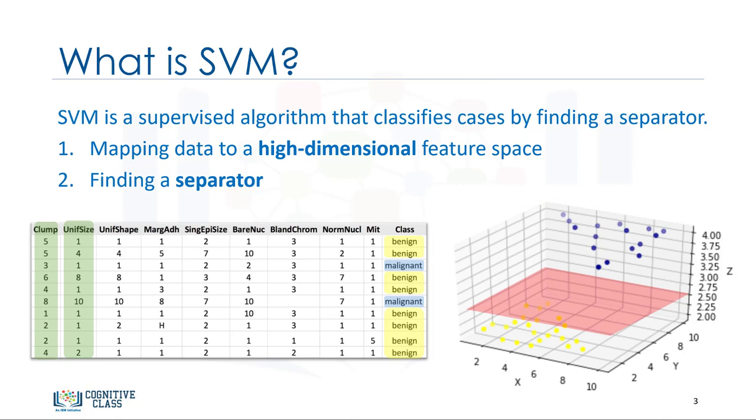After the transformation, the boundary between the two categories can be defined by a hyperplane. As we are now in three-dimensional space, the separator is shown as a plane. This plane can be used to classify new or unknown cases. Therefore, the SVM algorithm outputs an optimal hyperplane that categorizes new examples.